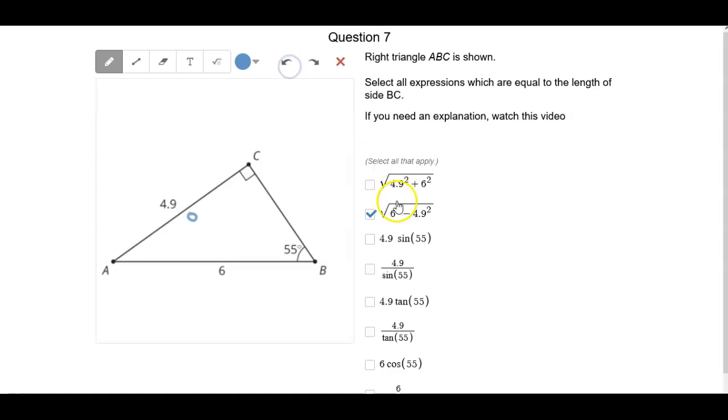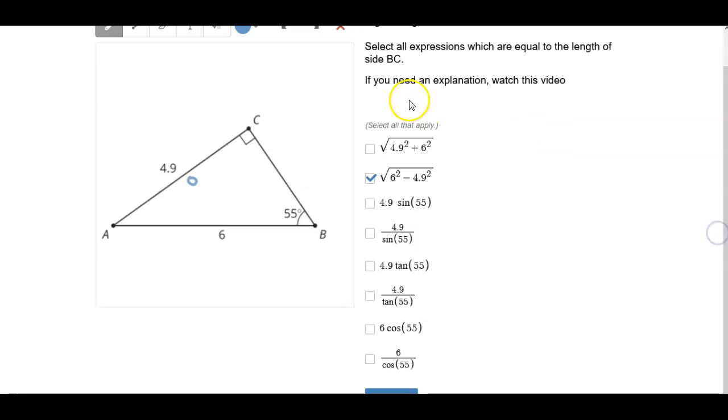However, the next two are using the tangent. And tangent is opposite over adjacent. Because remember this is where our theta is. Opposite over adjacent. So this is what we're looking for. So we know that these two aren't going to work. So maybe one of these two would work. So 4.9 tangent of 55 or 4.9 divided by the tan of 55.